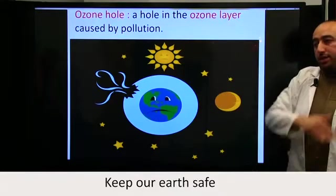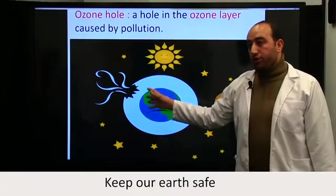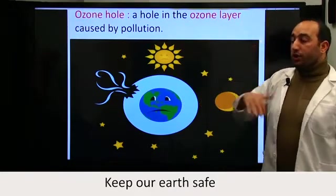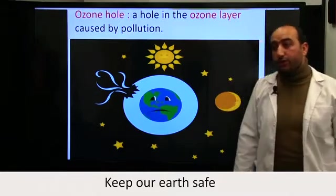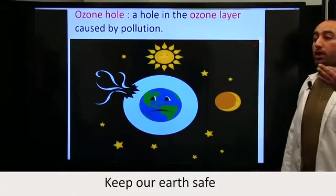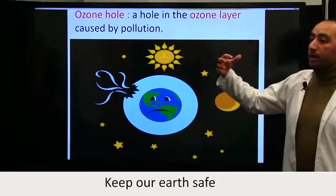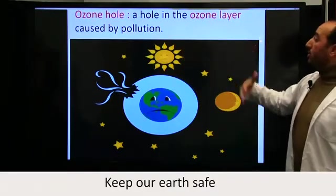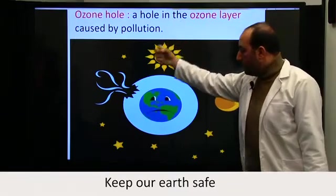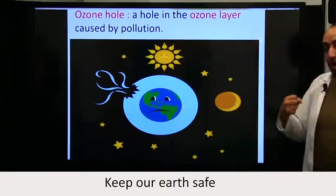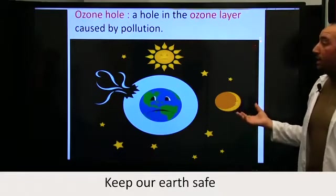The ozone layer protects humans and other creatures from ultraviolet radiations. When there is a hole in the ozone layer, it is a problem because ultraviolet radiations will reach our planet, and this may cause real danger.